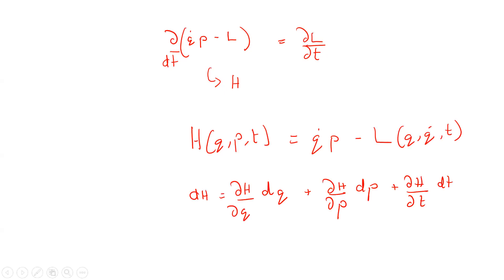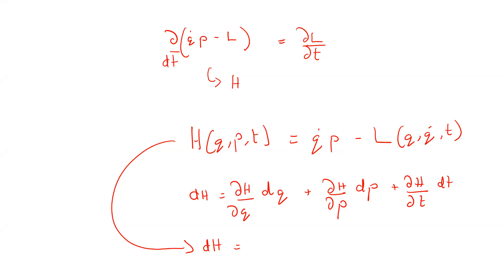This is because H is a function of these three variables. Now, based on this equation, we can differentiate it partially with respect to the functions that are here. To the first term, we apply the UV rule, so the total derivative of this term with respect to time becomes: Q-dot dP minus P-dot dQ minus the partial derivative of L with respect to time multiplied by dt.